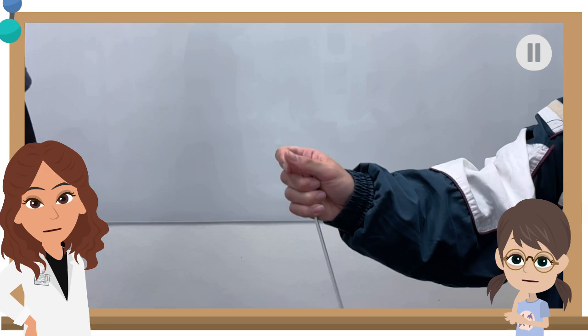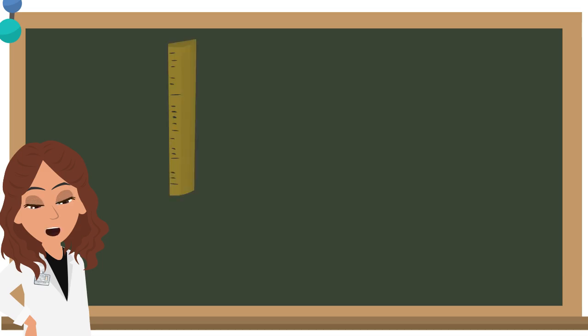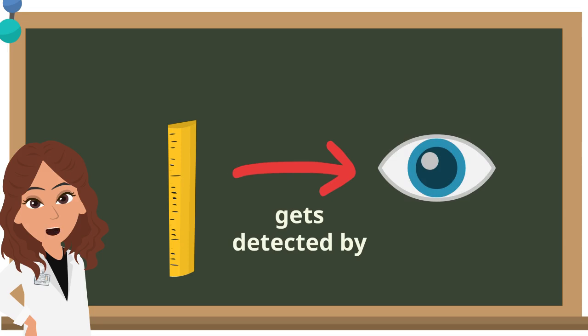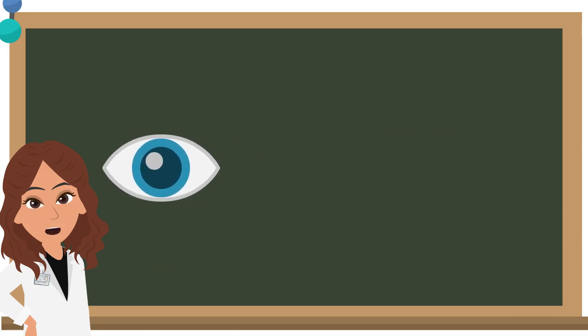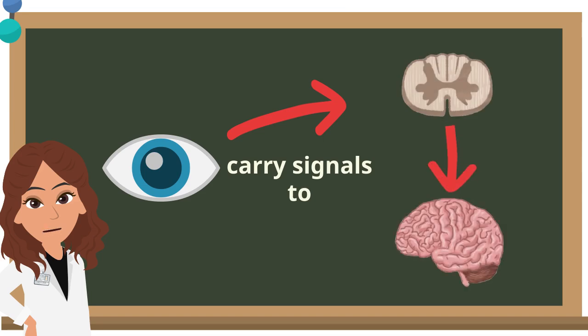Whoa! The ruler was caught in time! Yes! When the ruler is released, the sensory nerves in our eyes detect what is happening. They carry signals to the spinal cord which relay the signals to the brain.